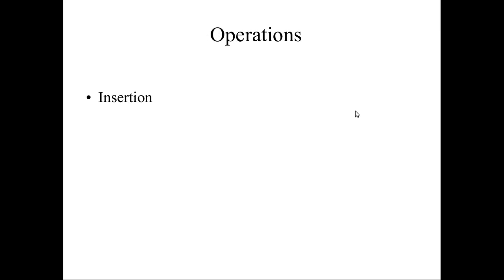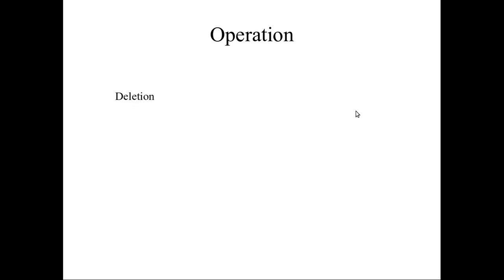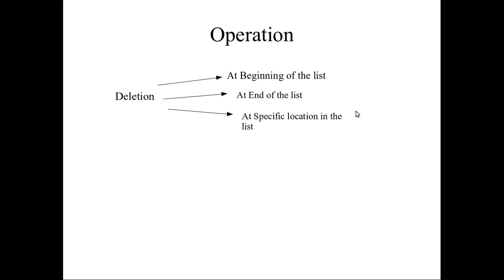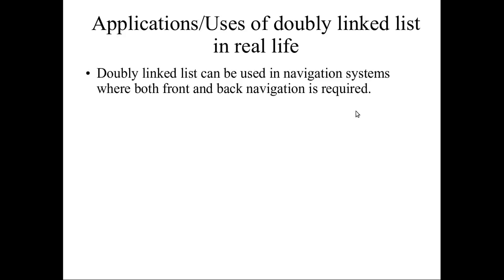Operations are similar to the singly linked list. There are two operations: insertion and deletion. For insertion, there are three types: at the beginning of the list, at the end of the list, and at a specific location. Deletion also has three types: delete the head node, delete the end node, and delete a specific node in the list.